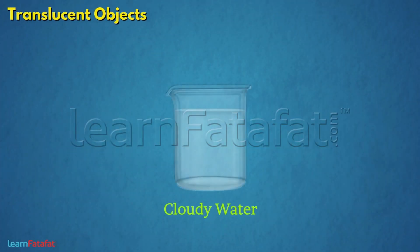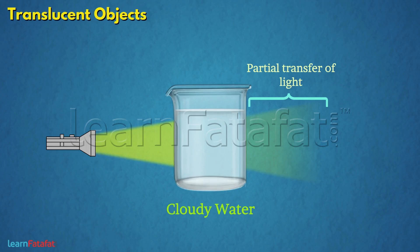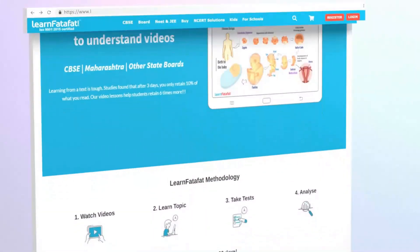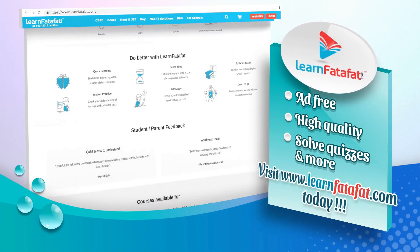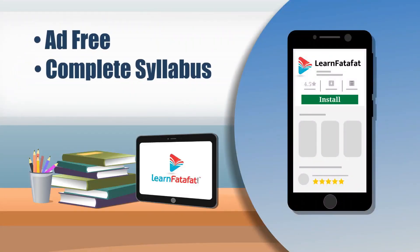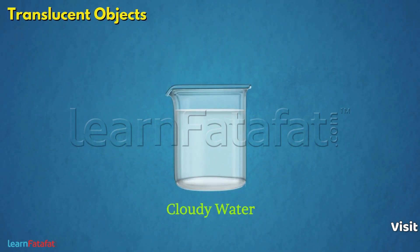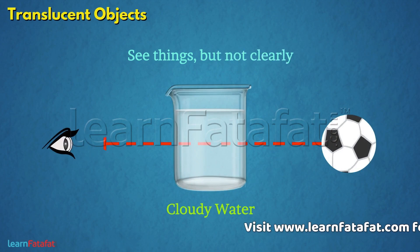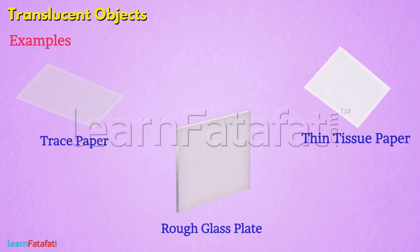Some objects such as cloudy water allow a small amount of light to pass through them. In other words, there is partial transfer of light through such objects. Because of which, we can see things through them but not clearly. These objects are called translucent objects. For example: tracing paper, rough glass, thin tissue paper, etc.